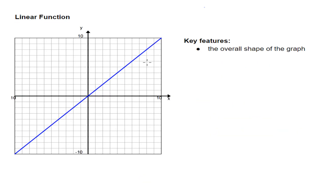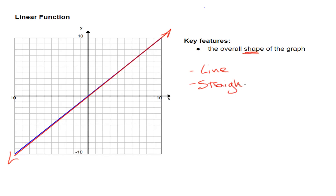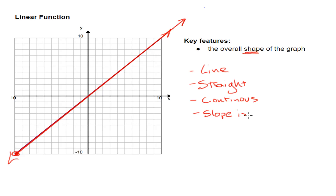What is the overall shape of a linear function? Well, here we have a linear function and the main thing we can say about this shape is that this is a line. It's also really straight. So we have a straight line. Are there any gaps in it? No, there are not. So I can say it is continuous. Also, if I start on the left side of my graph, I am traveling up, so I know that my slope is positive.